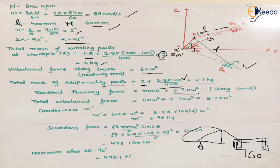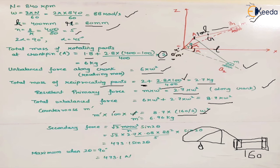The total unbalanced force is due to both revolving and reciprocating parts: 6rω² + 2.7rω² = 8.7rω². To balance this, a counter mass m′ is placed at radius r′ such that m′r′ω² = 8.7rω². The omega² cancels, and substituting r = 80 mm, we can calculate the required counter mass m′ to balance the system.